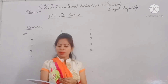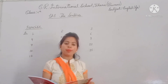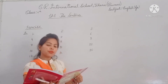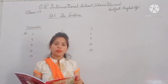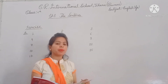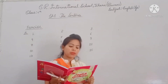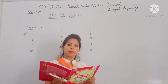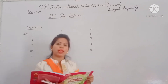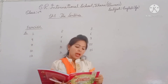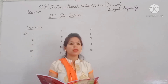Open your books at Chapter 1, page number 6. See the first exercise. We will do Exercise 1. Read the question: 'Read the words given in the box in alphabetical order.' We have words given in the box — look at your book. We have to arrange them in alphabetical order.